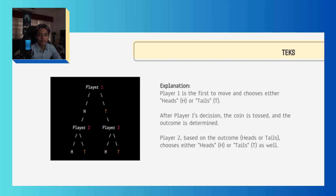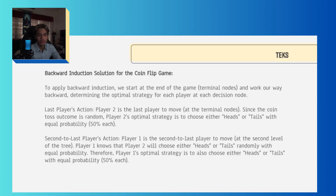Player 1 is the first to move and chooses either heads or tails. After Player 1's decision, the coin is tossed and the outcome is determined. Player 2, based on the outcome, also chooses either heads or tails. To apply backward induction, we start at the end of the game at the terminal nodes and work our way backward, determining the optimal strategy for each player at each decision node.